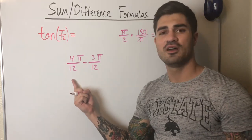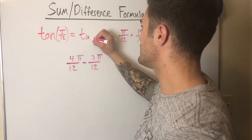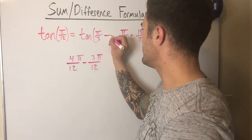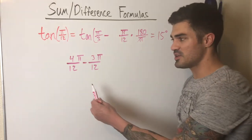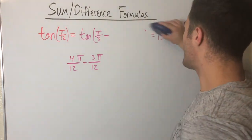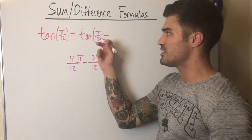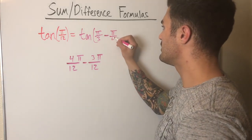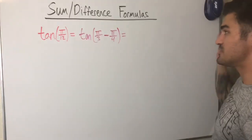Going back to radians: 4π/12 simplifies to π/3, and 3π/12 simplifies to π/4 — that's 60 minus 45, which checks out. So I can rewrite tangent of π/12 as tangent of (π/3 minus π/4) and go straight into the simplified version.